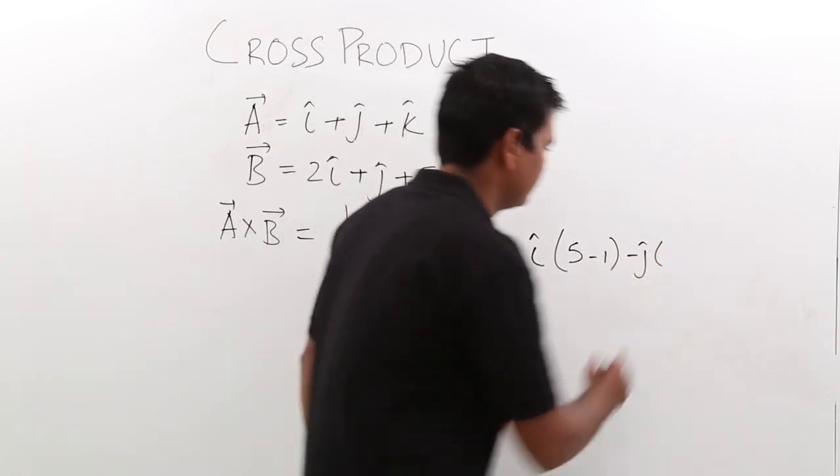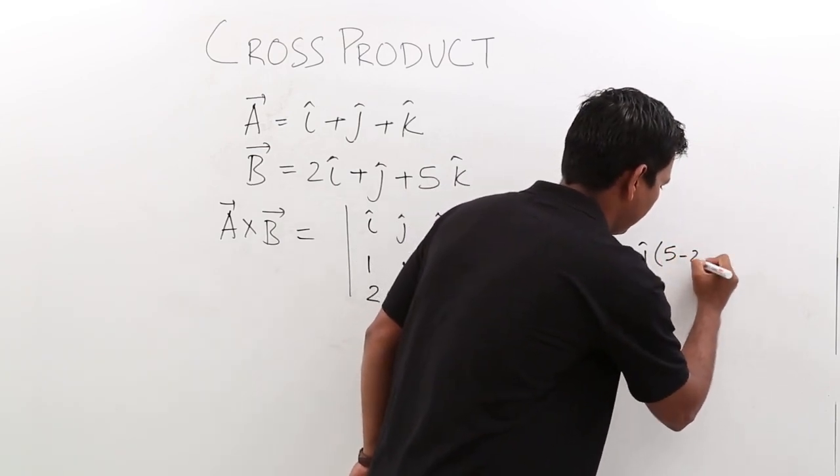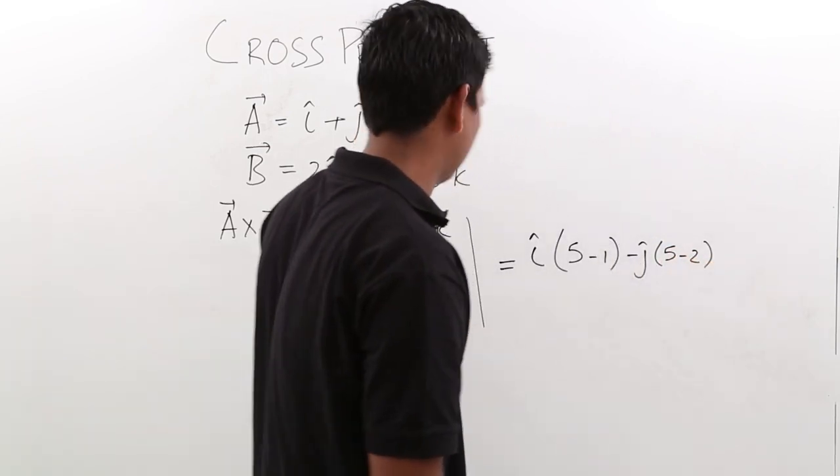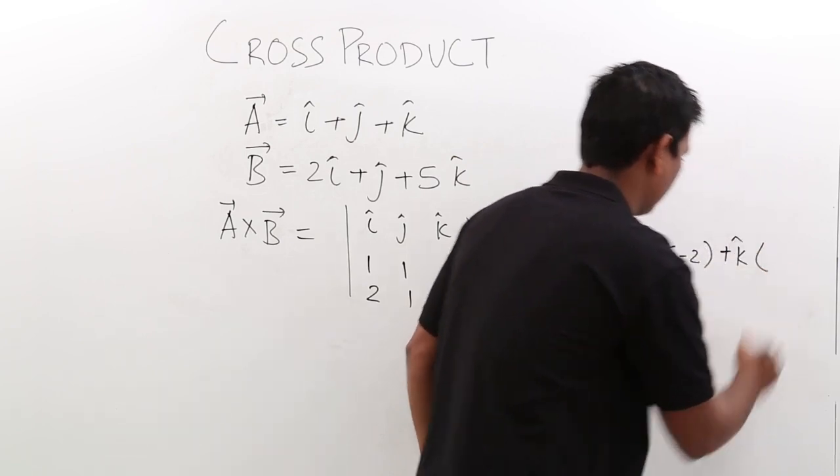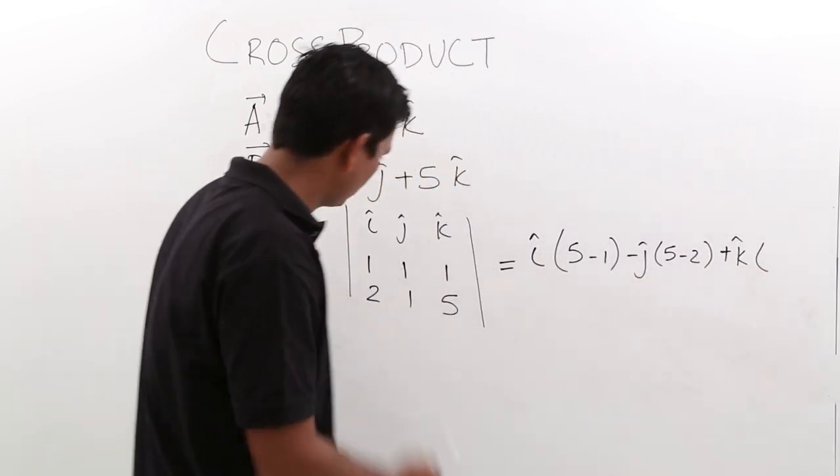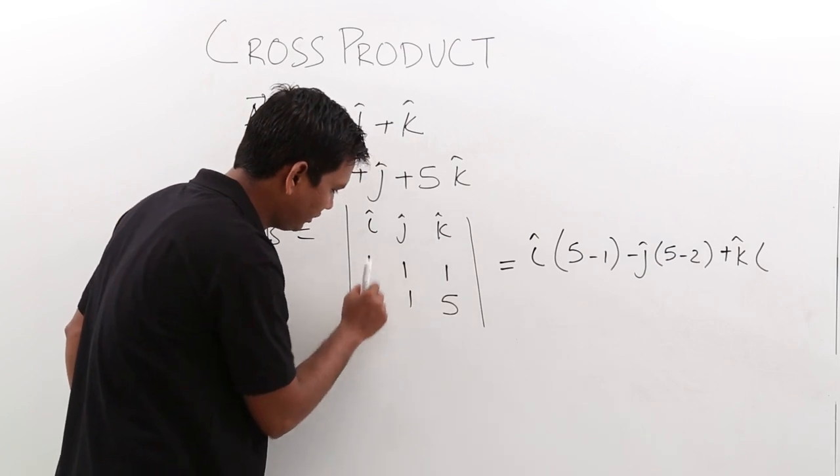5 minus 2, plus k cap. For k cap, it is 1 minus 2.